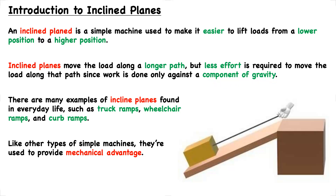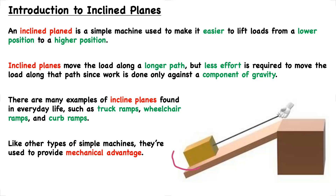Let's consider this a little bit further. In this illustration, we have some object with a string attached, and it's being pulled up the inclined plane. If we compare that to taking the same object and lifting it directly upwards, we notice the distance it will travel to get to the top will be less. However, it will be working directly against the force of gravity, which requires more effort. With the inclined plane, because it's at an angle, it's acting only against a component of gravity, so it requires less effort, although the distance will increase.